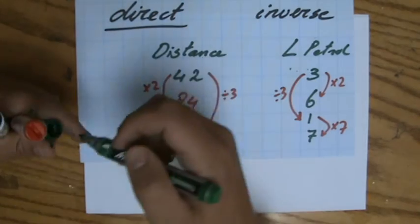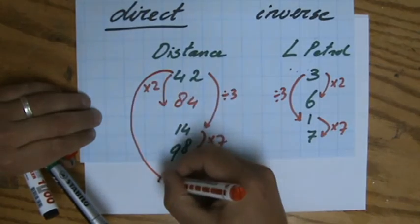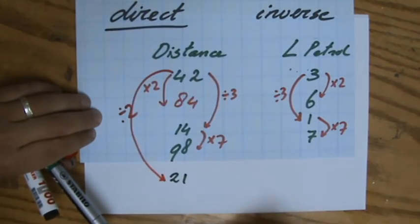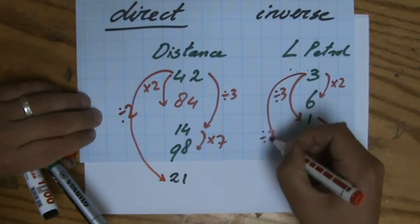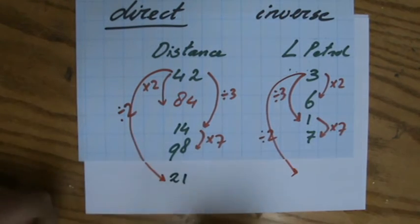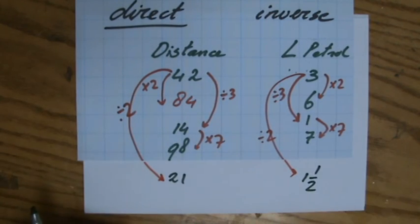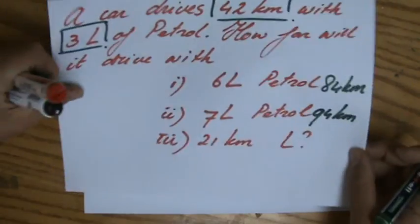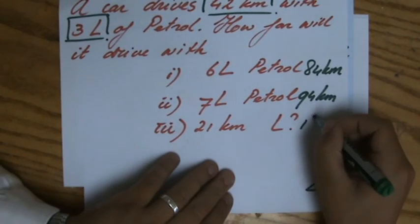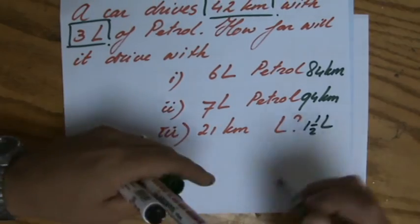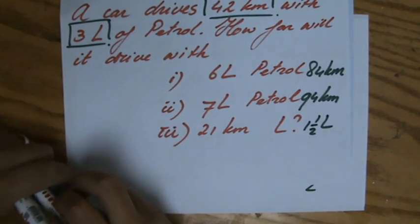I'm going to put 21 here. Now, perhaps you already see, to go from 42 to 21, I divided by 2. So direct proportion, that one also needs to be divided by 2. That would be 3 divided by 2, which is 1.5. So the answer to that question, 21 kilometers, if that is the distance to go to my grandma or whoever, then I need to make sure I buy 1.5 liters of petrol.